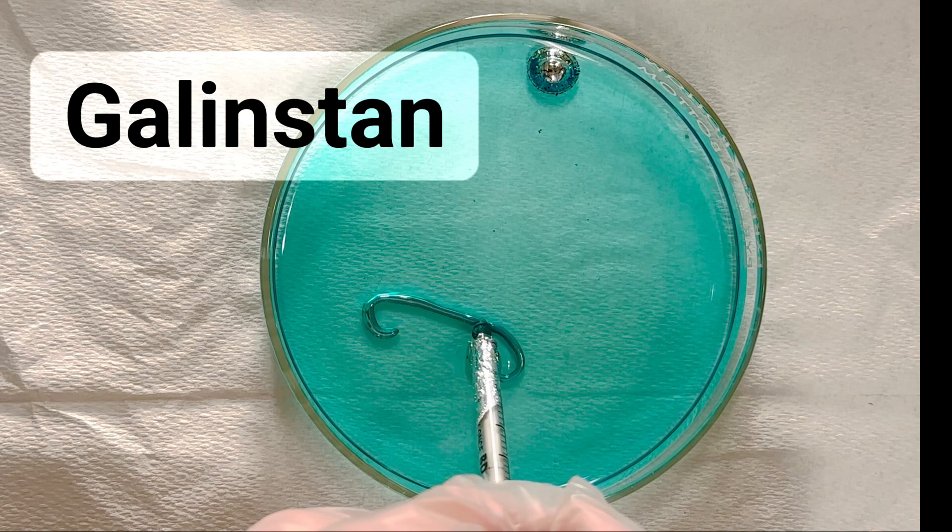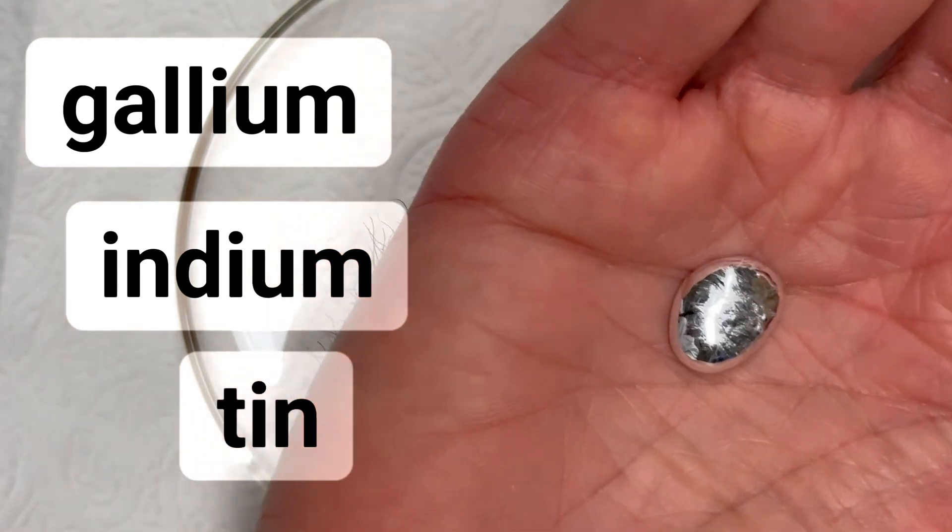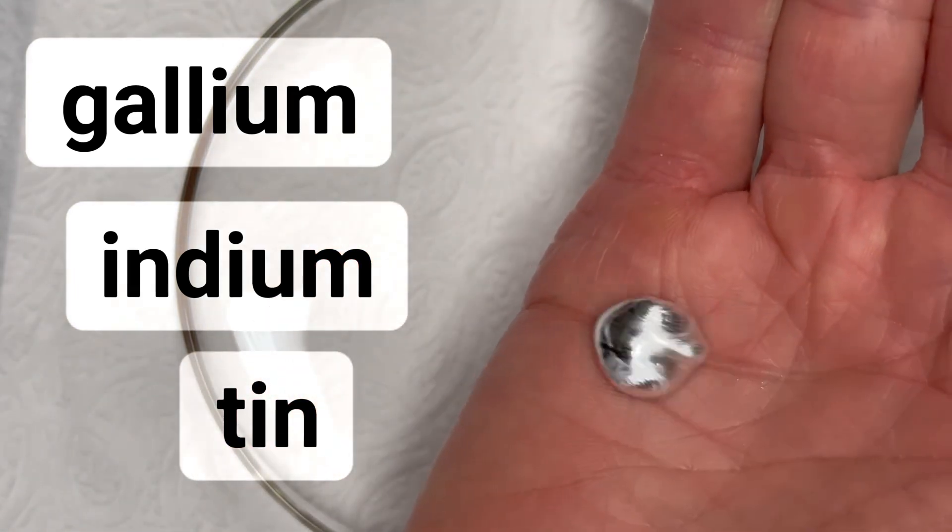Gallenstan's a liquid metal alloy that consists of three elements: gallium, indium, and tin. It looks like mercury but has a much lower toxicity, so it's safe to hold in your hand.